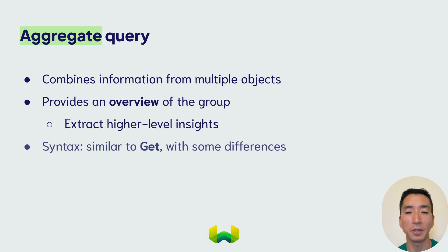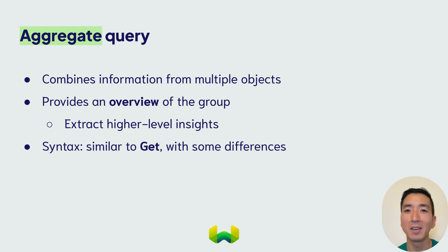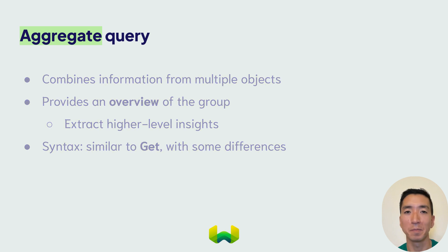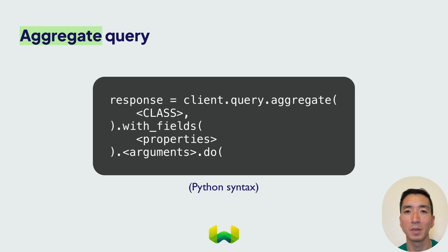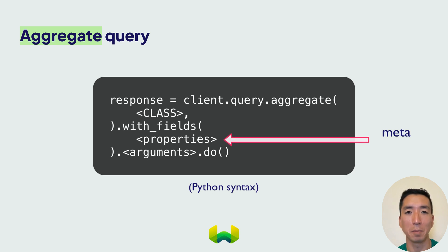The syntax for aggregate queries is similar to GET queries, but there are some key differences. Let's take a look at the basic syntax for an aggregate query. With aggregate queries, you can retrieve what we call meta properties, such as the count, as well as aggregations of each property.